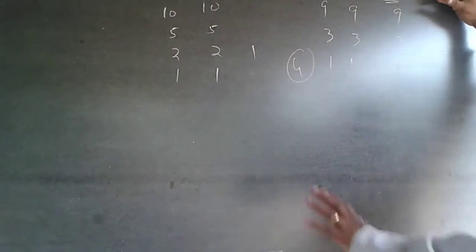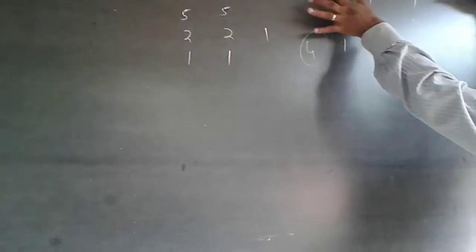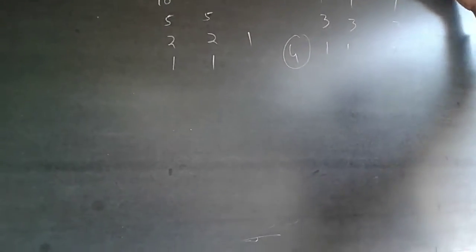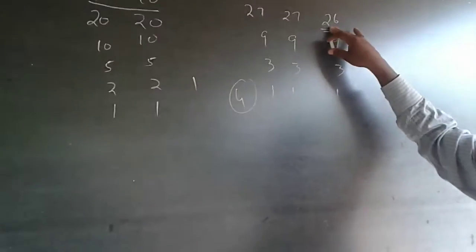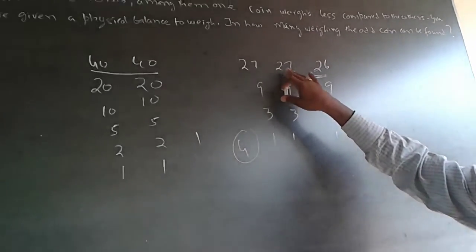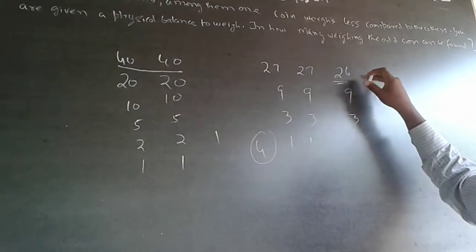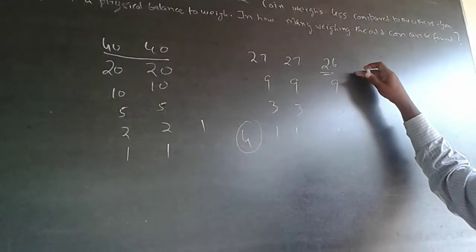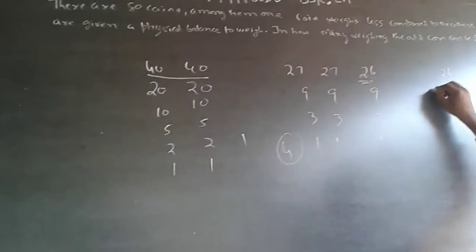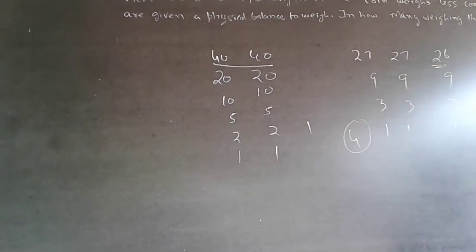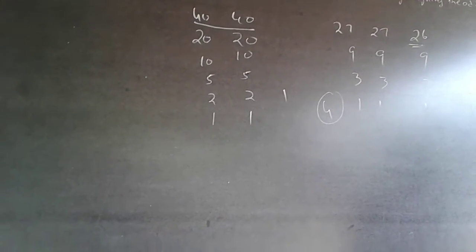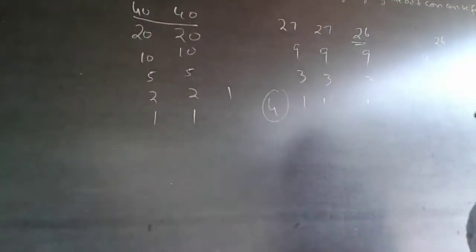Some students ask: what happens if the defective coin ends up in the group of 26? Well, 26 is only relevant when weighing. Take one coin from the other 54 coins and make it 27, then continue dividing by 3. Or, if you want to work only with 26: divide by 3 to get 9, 9, and 8. If the group of 8 is wrong, divide by 3: 3, 3, and 2. It still resolves in 4 weighings.